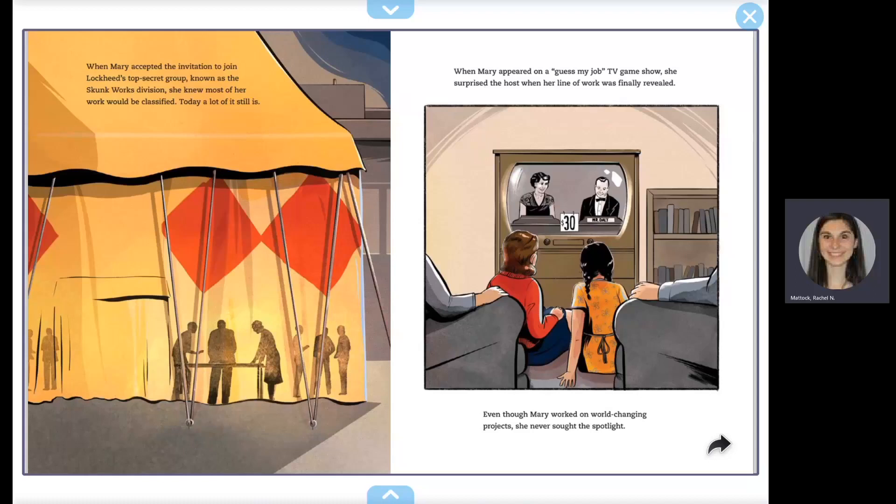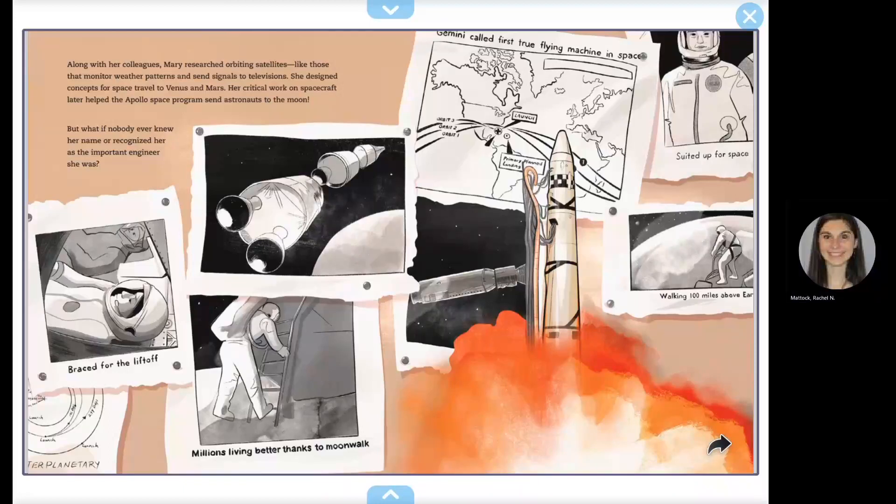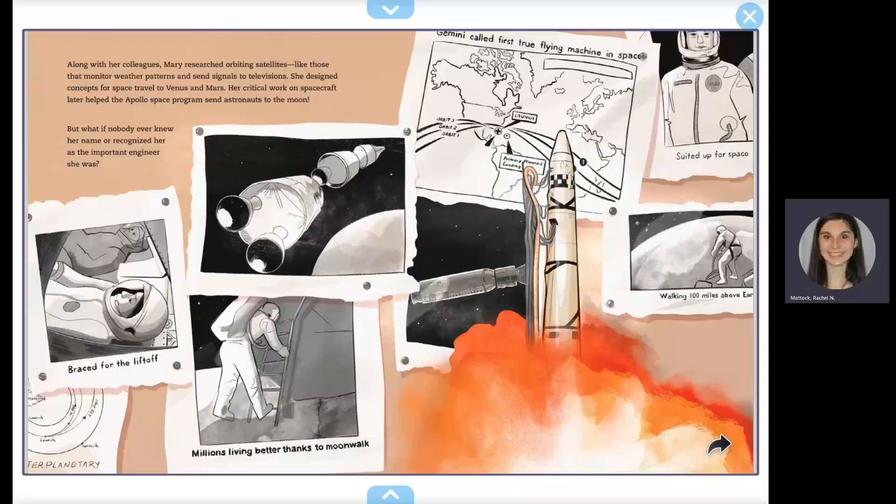Along with her colleagues, Mary researched orbiting satellites, like those that monitor weather patterns and send signals to televisions. She designed concepts for space travel to Venus and Mars. Her critical work on spacecraft later helped the Apollo space program send astronauts to the moon.